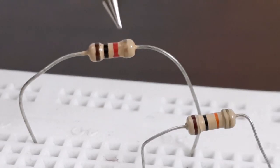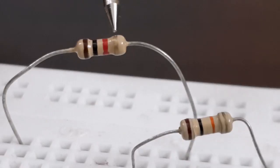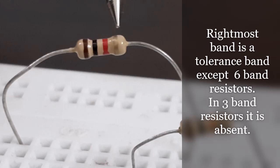Let me give you one hint here. In most cases, the last band is for the tolerance of the resistor, which we can easily identify using its color: gold and silver.